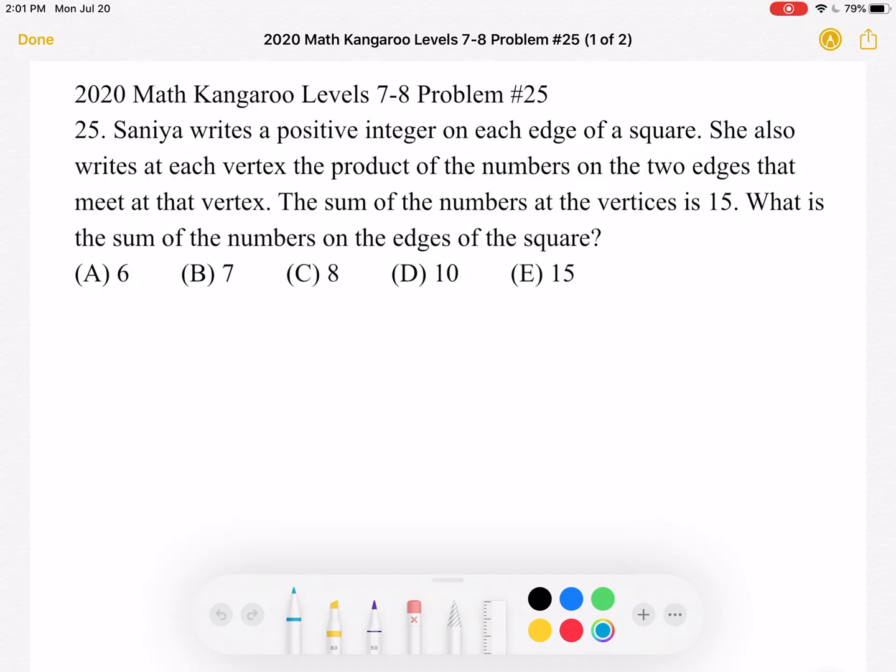Sania writes a positive integer on each edge of a square. She also writes at each vertex the product of the numbers on the two edges that meet at that vertex. The sum of the numbers at the vertices is 15. What is the sum of the numbers on the edges of the square?